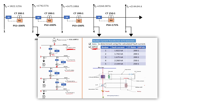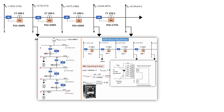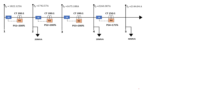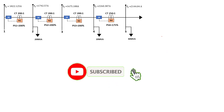Then we moved on to tutorial number six, where we needed to complete the remaining element for our network — that was the plug settings. We did the plug settings for these IDMT relays; they needed the plug settings in order to prepare and calculate the tripping time for the IDMT relay. So take time to watch all these tutorials so you can build a solid understanding of how an electrical network is configured, designed, and all the elements necessary to assure a reliable working electrical network.